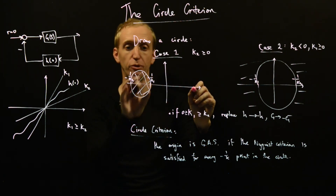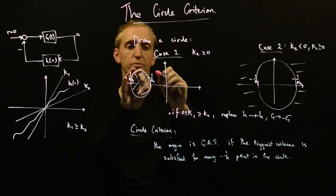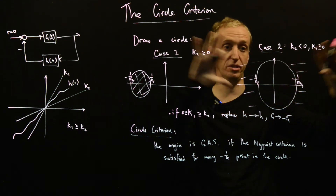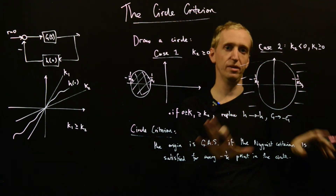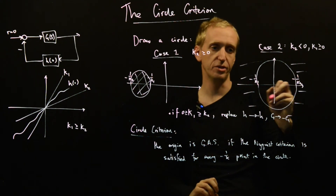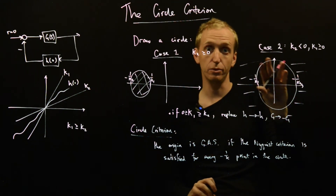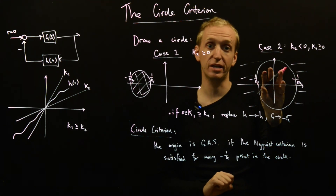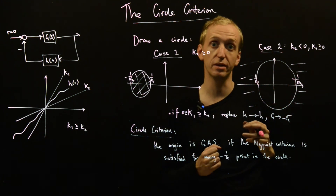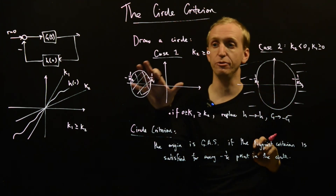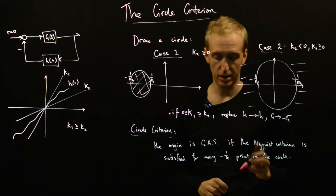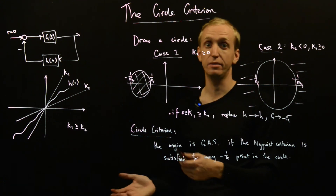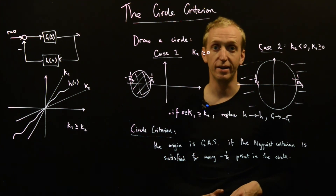So if we're in case 1, we need our Nyquist diagram to lie outside the circle. In case 2, the circle is out on the other side, so it's not possible to get any encirclements regardless — which means if your system is unstable you can never prove stability in case 2, whereas you can in case 1. Really the best way to get familiar with these is to just practice them yourselves. We'll do a quick example now to give you the idea.